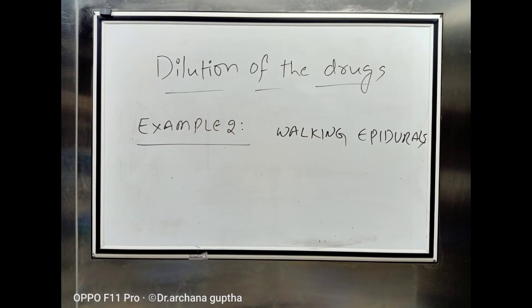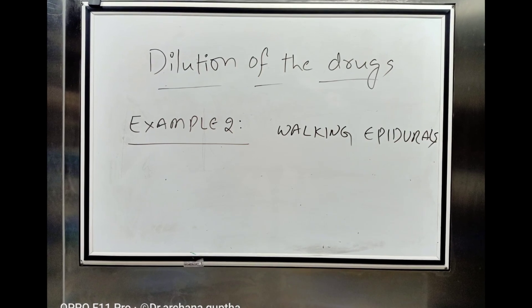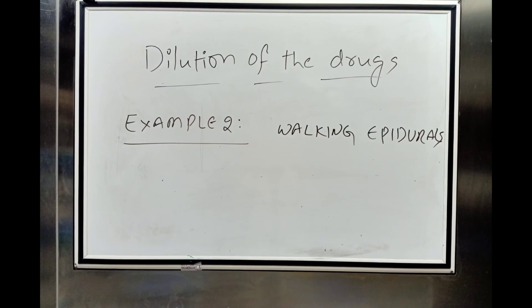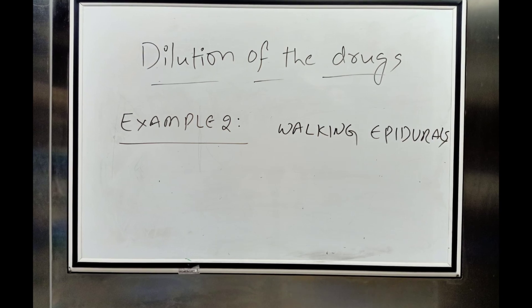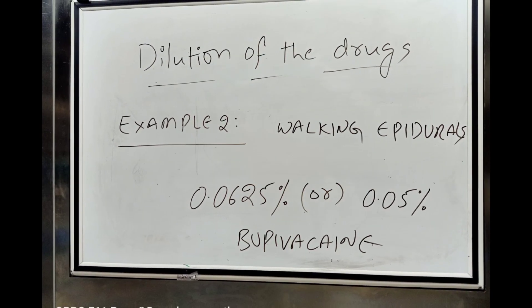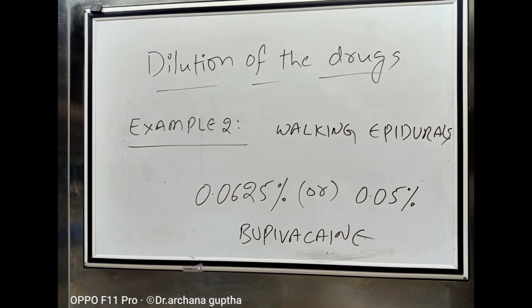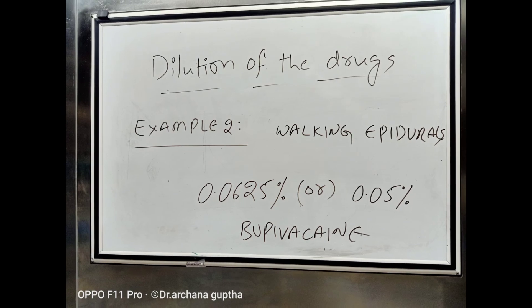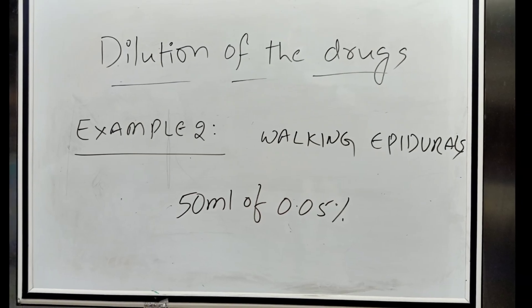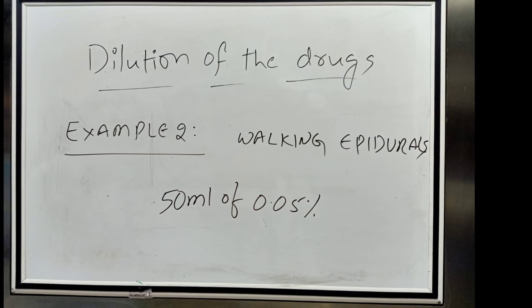Coming to the second example. In some centers, walking epidurals are used for labor analgesia where very diluted concentrations of local anesthetic solutions are used. Usually, 0.0625% or 0.05% concentration of bupivacaine are used. Now, I am going to prepare 50 ml of 0.05% bupivacaine solution.